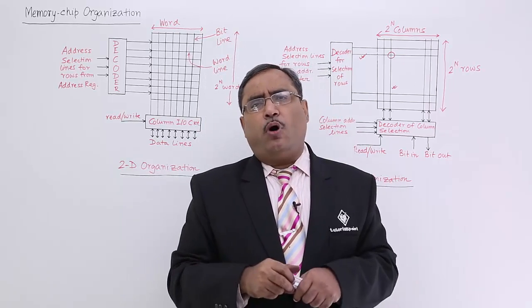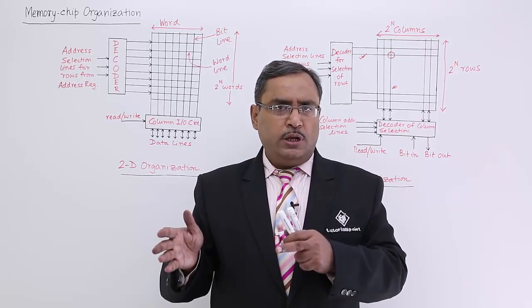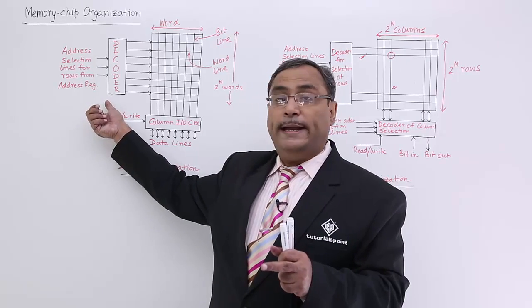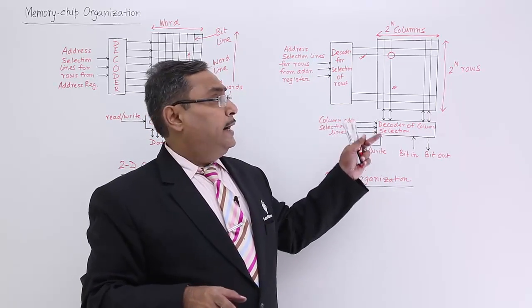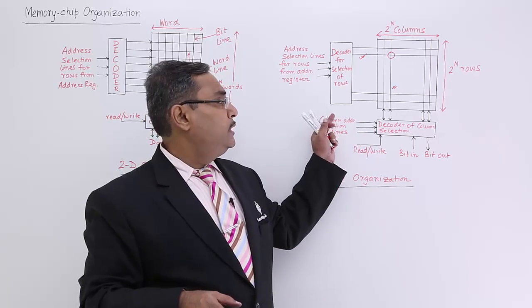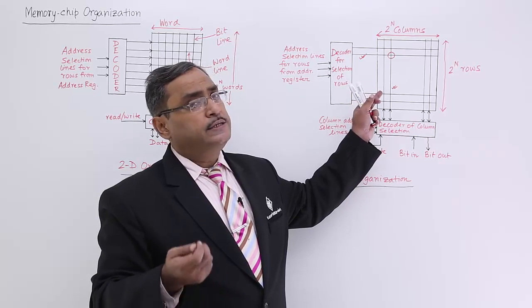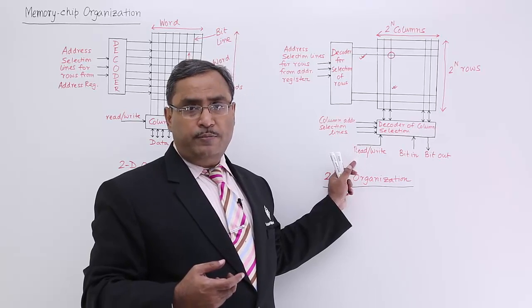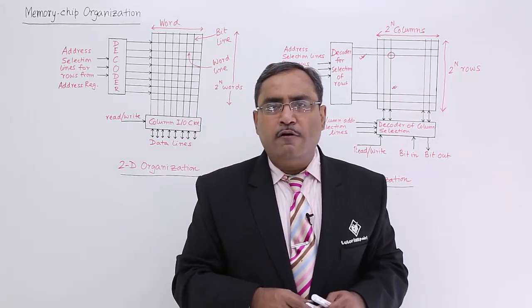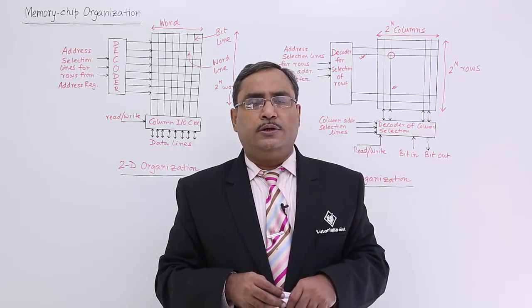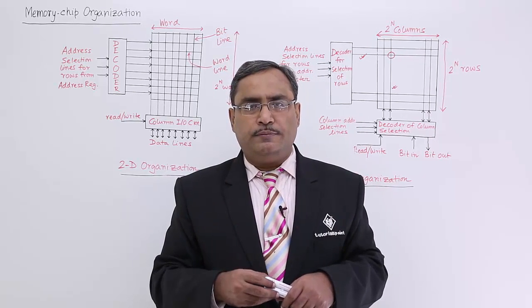This is the memory chip organization. In this session, we discussed 2D and 2.5D memory organization. In 2D, all address bits go to the input of the row decoder. In 2.5D, address bits are divided — some go to the row decoder and some to the column decoder — selecting a single cell, from which a single bit is read or written via bit-in and bit-out lines. Multiple such circuits work in parallel for multi-bit word sizes. Draw these circuits in your exam copies if such questions come in future. Thanks for watching.